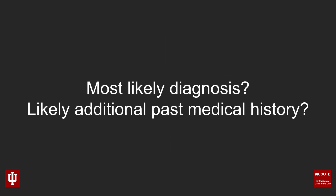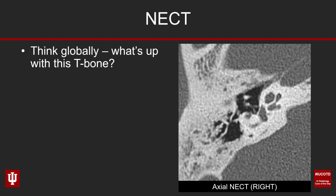What is the most likely diagnosis and what additional past medical history has this patient almost certainly had? Let's take a look at the imaging. First up, we're looking at the patient's right side — the abnormal side, the side with conductive hearing loss. At first, nothing may really jump out as abnormal, and that's okay — that happens a lot when looking at temporal bone CTs. I like to think globally: what do you make of this temporal bone? Does it look normal, or does something seem to be going on?